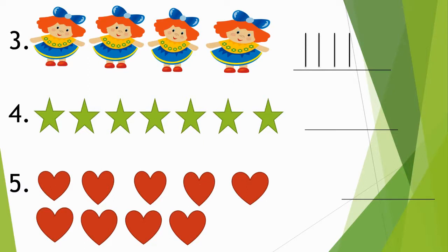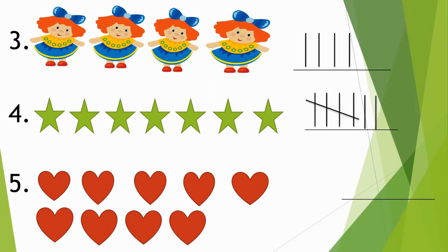In the fourth picture we have stars. Let's count how many stars there are: 1, 2, 3, 4, 5, 6, 7. There are 7 stars. So how many tally marks will I draw? Yes — 1, 2, 3, 4, and 5. I will draw a cross line to make a group of 5, then 6, 7. I will draw 7 tally marks.